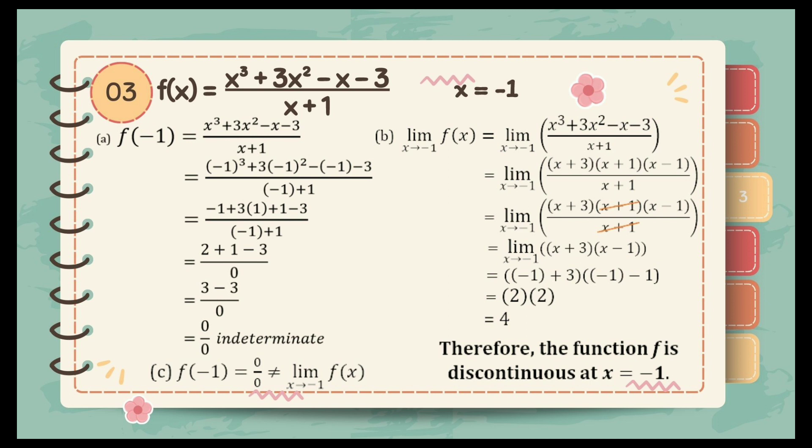Hence, the limit of (x plus 3)(x plus 1)(x minus 1) all over (x plus 1) as x approaches to negative 1. We can cancel the x plus 1 terms, leaving the limit of (x plus 3)(x minus 1) as x approaches to negative 1. Substituting negative 1: negative 1 plus 3 is 2 and negative 1 minus 1 is negative 2, giving the answer 4. Since it does not satisfy the first condition which is indeterminate, therefore the function is discontinuous at x is equal to negative 1.